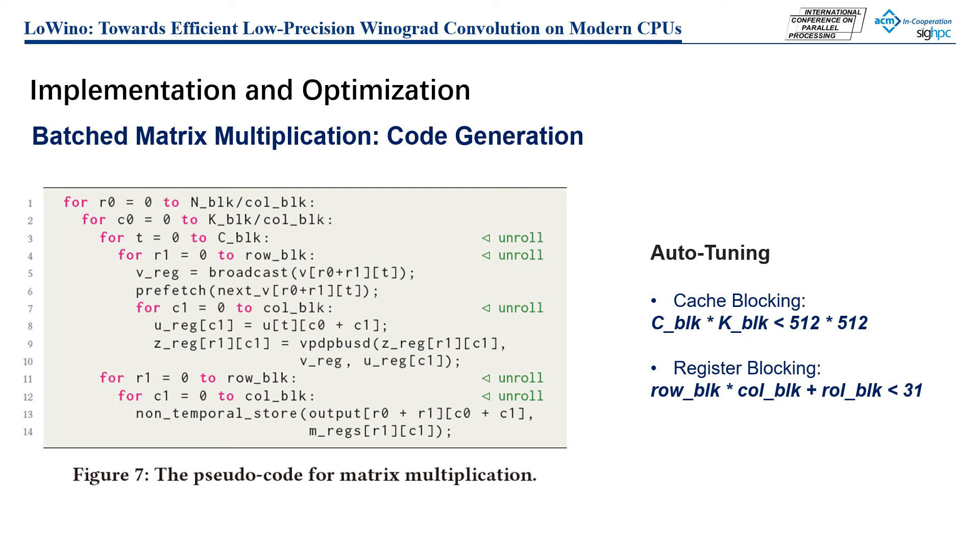Based on the blocking strategies, we generate codes for single-blocked matrix multiplication operations. As the configurations of convolutional layers are known at compile time, we can utilize constants such as the number of loops and the offset of memory access to optimize the codes. We also use non-temporal stores to reduce the scattering operation latency. There are several tunable parameters for code generation, and we leverage an auto-tuning process to find the optimal parameters.